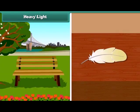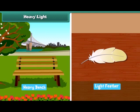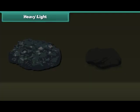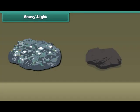Things which are difficult or impossible to lift are heavy, and things which can be carried easily are light. The stone on the left is heavy and the stone on the right is light.